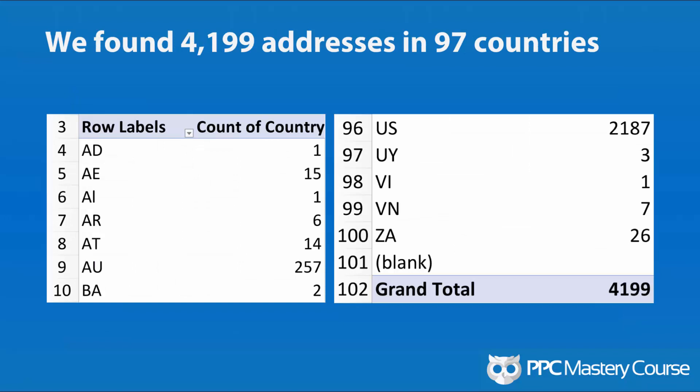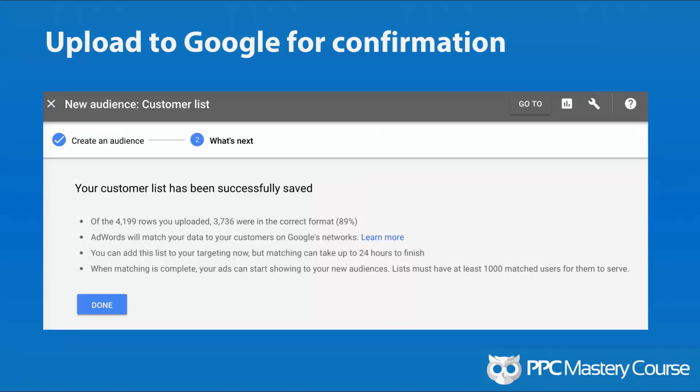When it was all said and done, I had 4,199 addresses from 97 different countries, which is really cool — I had no idea I had students in 97 different countries. Google said they found 3,736 in the correct format, meaning all four columns — first name, last name, zip code, and country code — were present, and they were able to upload it and try to find these people.